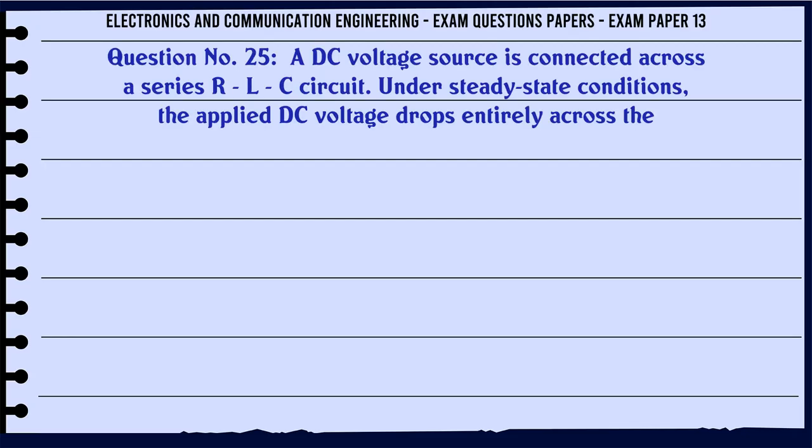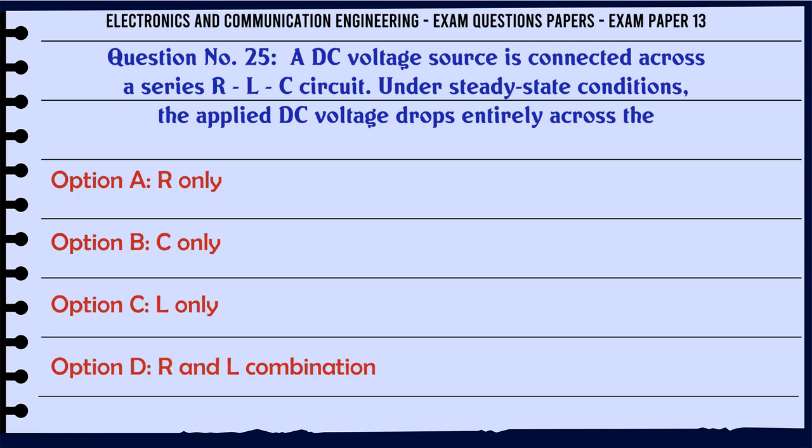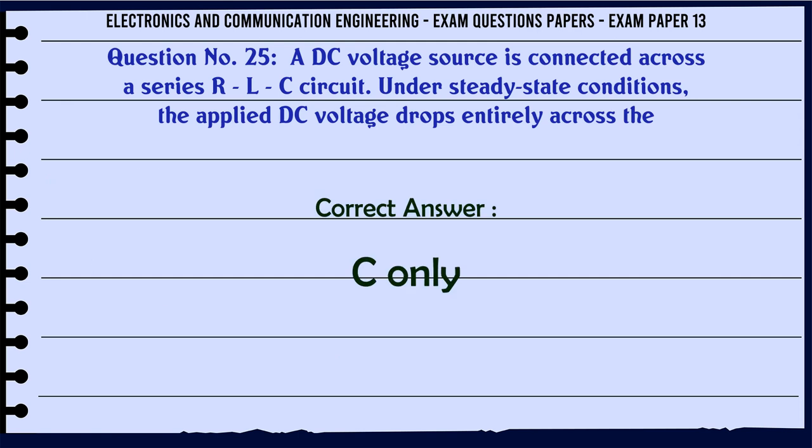A DC voltage source is connected across a series RLC circuit. Under steady state conditions, the applied DC voltage drops entirely across the: A: R only, B: C only, C: L only, D: R and L combination. The correct answer is C only.